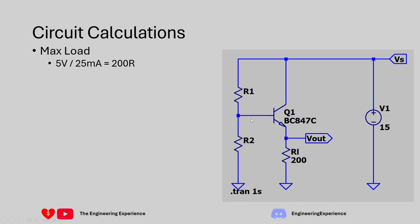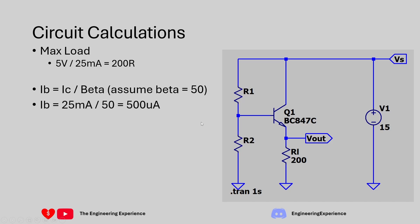I've introduced R1 and R2 as the potential divider driving the input, with the 15 volt power supply going to the divider and the collector of the NPN transistor. The base current equals the collector current divided by beta, so the collector current equals base current times beta. For this question, I'm going to assume a beta of 50 for the NPN transistor. So calculating the base current: 25 milliamps divided by 50 gives us a base current of 500 microamps.